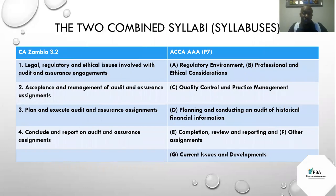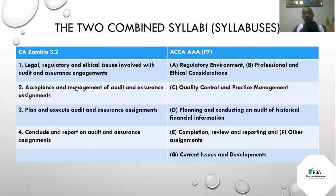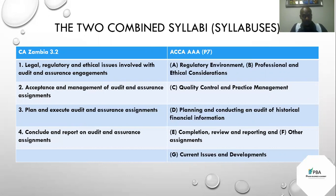When we combine the two syllabi, these are basically divided into four major aspects: legal, regulatory and ethical issues, which is A and B, and advanced audit — formally P7 under ACCA — which basically looks at the regulatory framework.